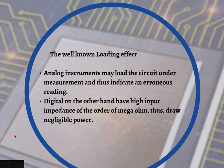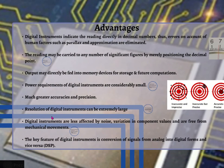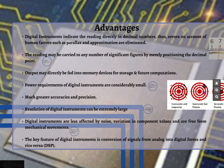Digital instruments have much greater accuracy and precision. As shown in the figures on the right, the first corresponds to inaccurate and imprecise readings, the second to inaccurate but precise readings — precise because the readings are quite close to each other but not close to the set point or desired value — while the third figure shows readings that are both accurate and precise.